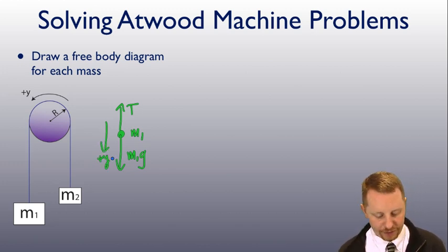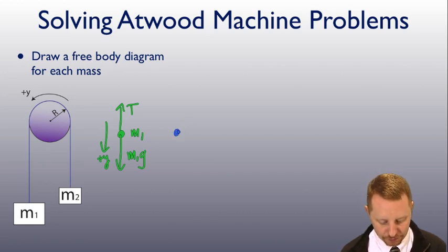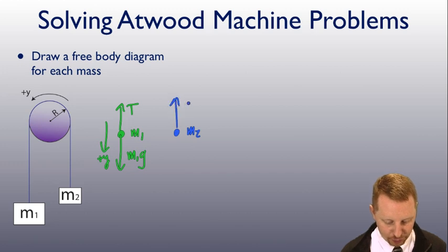On the other hand, if I go do a free-body diagram for mass 2, I have mass 2 here. Now I have tension pointing up again for mass 2 and M2G down. But in this case, we're calling up the positive y-direction.